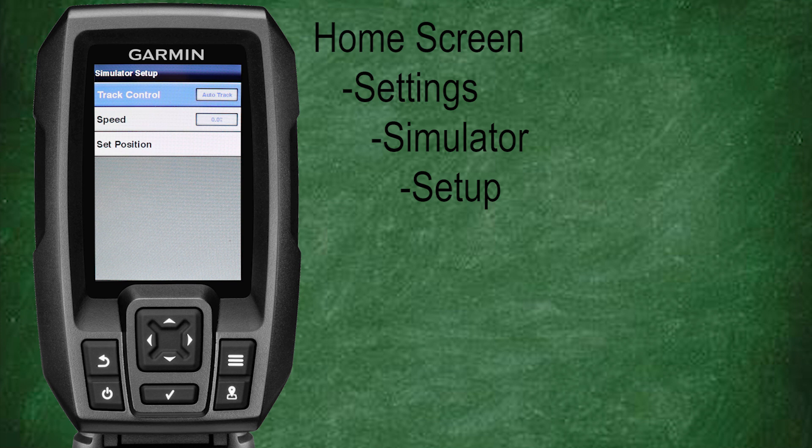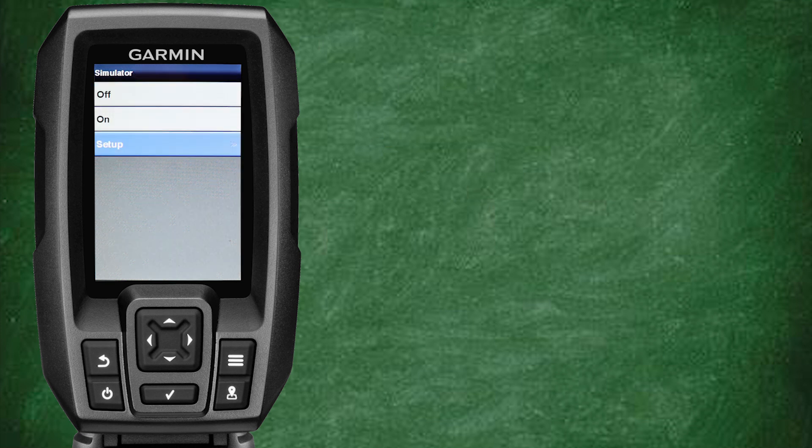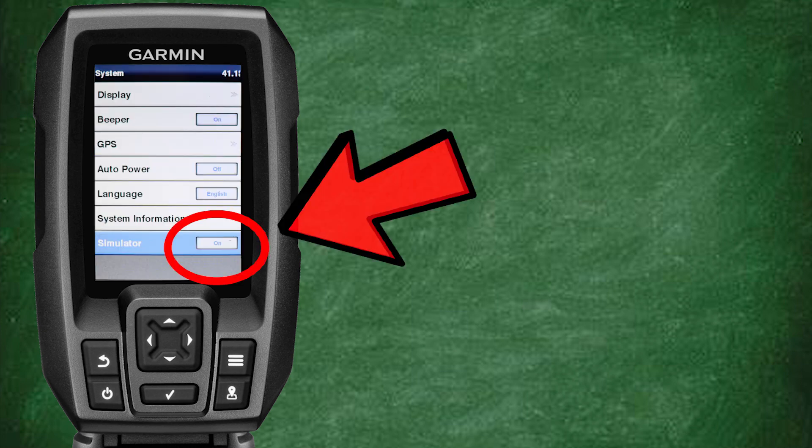Select OK. In setup we can now define our track control, speed, or set our starting position if we wish. In all honesty I don't go through the trouble of setting up these parameters in simulator mode, because the GPS features are not functions that simulator mode really provides a lot of added value with. Let's press the back key and return to the system menu. We can see our simulator is now on.